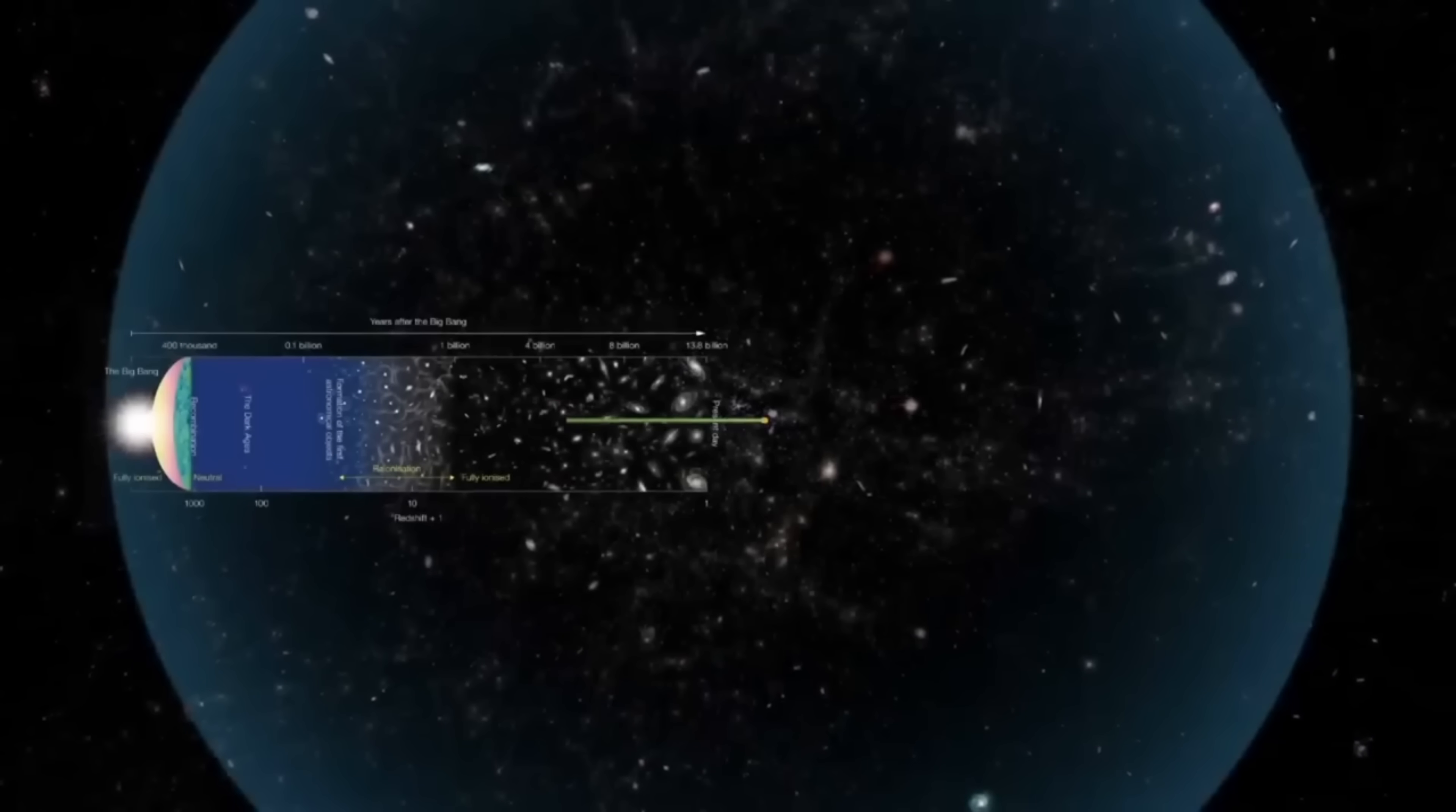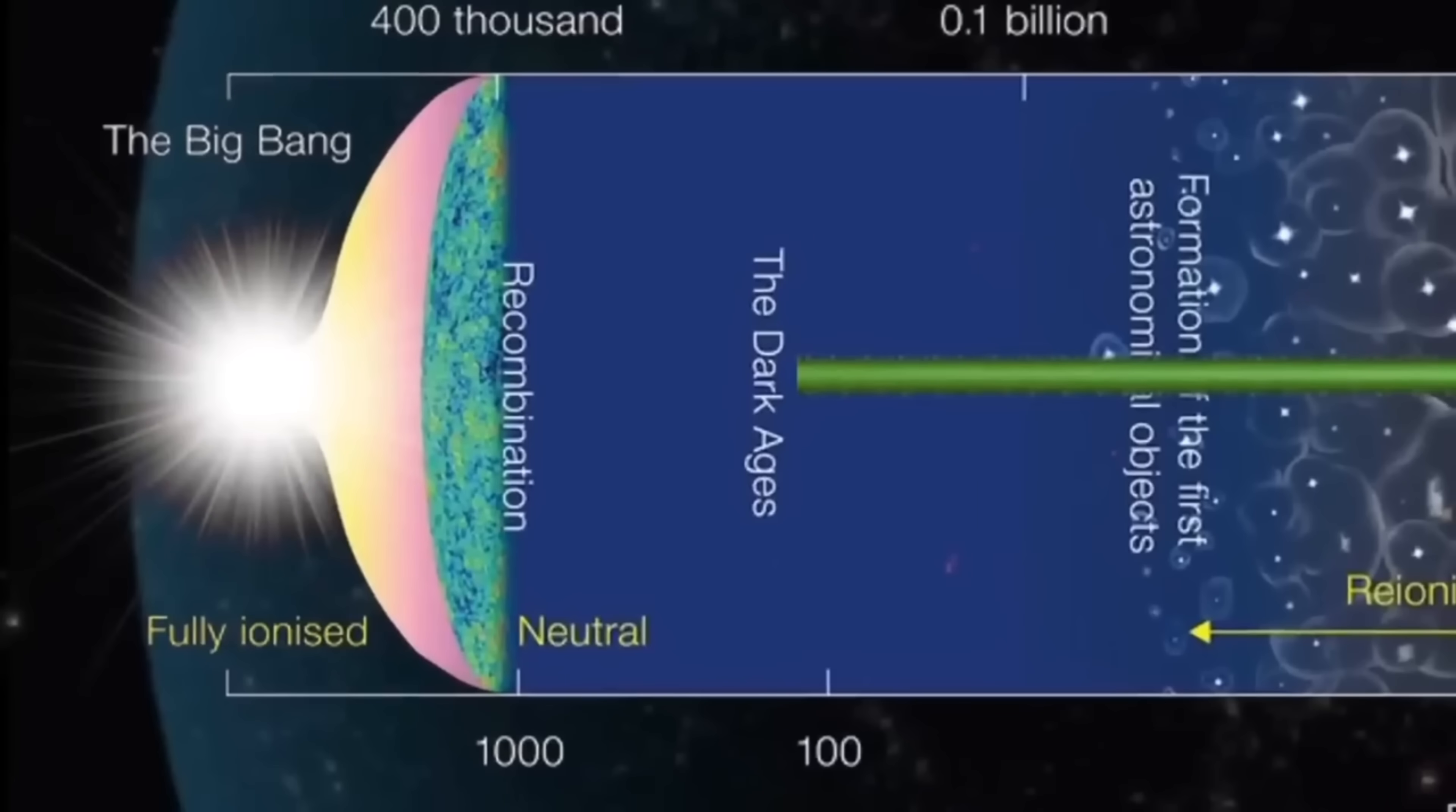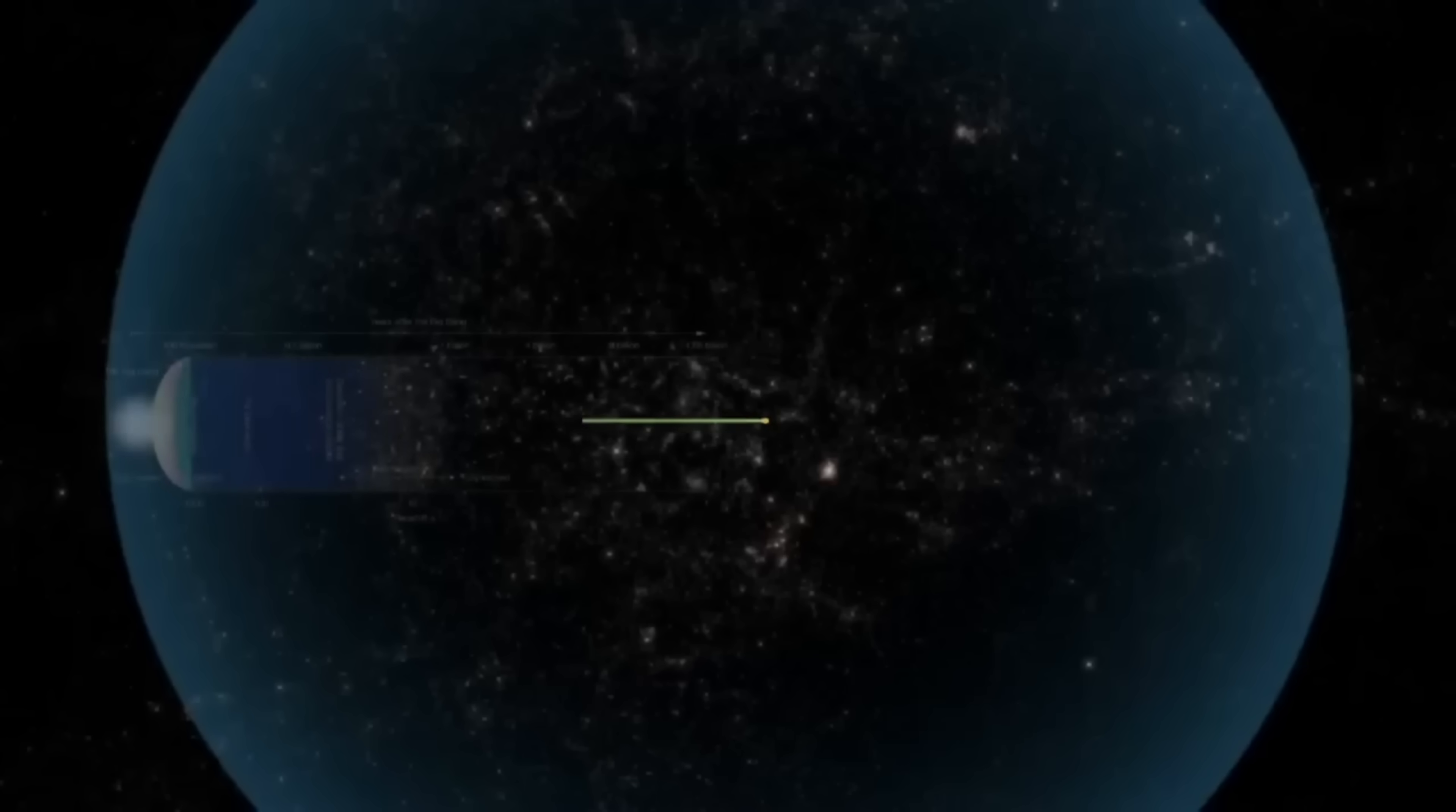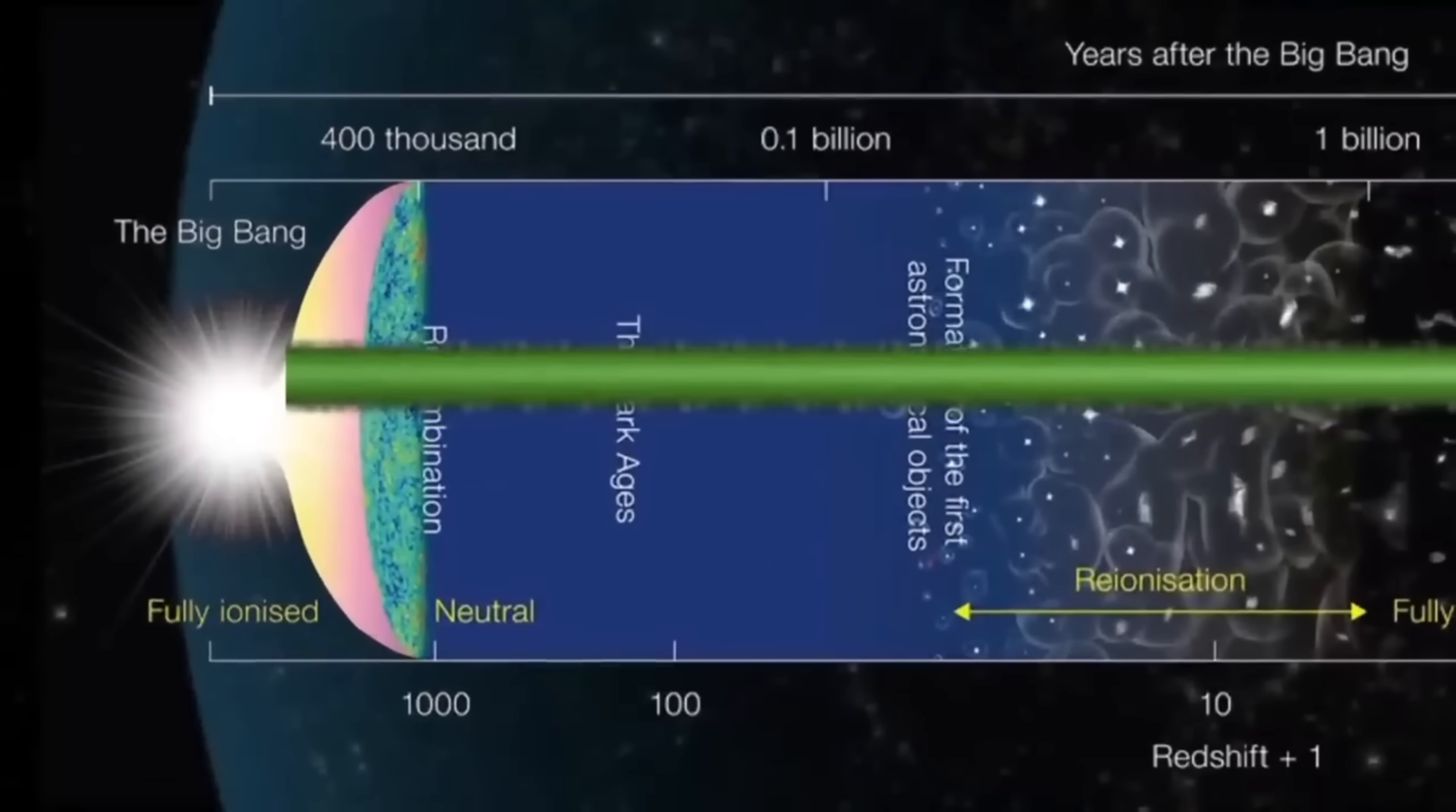If you look more than 13 billion light years away, then you will see the dark ages, which means that at this time, the whole universe was covered with dark clouds of hydrogen gas. According to the standard cosmological model, if we could look all the way to the edge of our observable universe about 13.8 billion light years away, we would see the very first moment of our universe, the Big Bang.